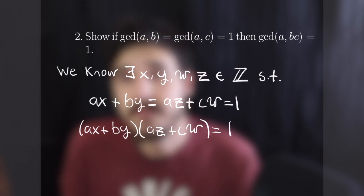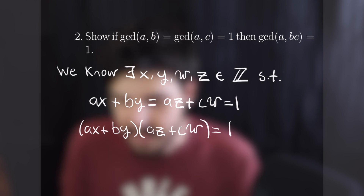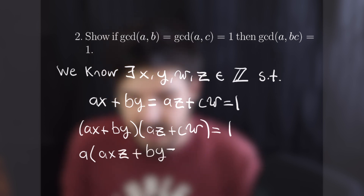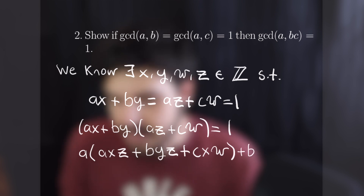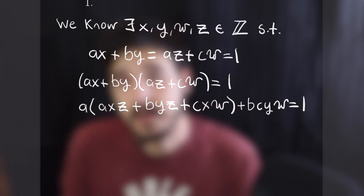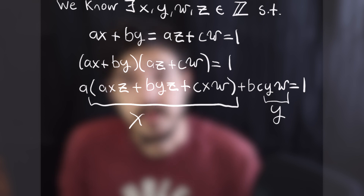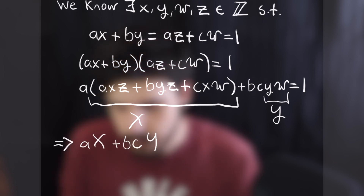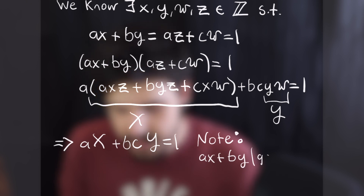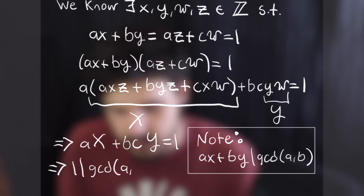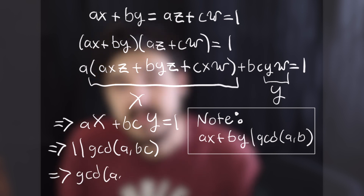We foil those out and rearrange so that we can show terms as multiples of a and bc. The bcyw term is easy to see; we can factor a out of all other terms, leaving us with a times (axz plus byz plus cxw) plus bcyw equals 1. Calling that large parenthetical expression X and yw as Y, we rewrite it as aX plus bcY equals 1. By our GCD rules, 1 divides the GCD of a and bc, which means GCD(a, bc) equals 1, completing the proof.